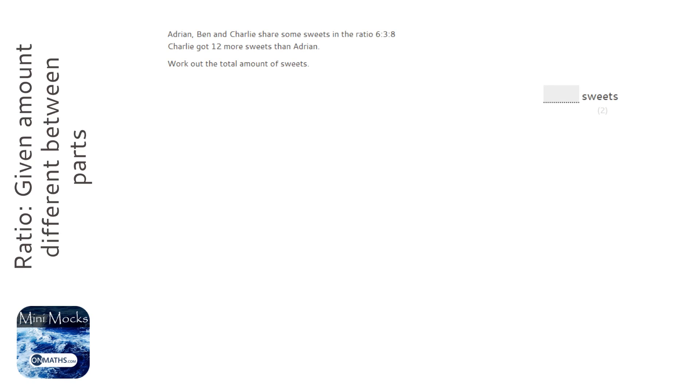OK, so this question is a little bit more complicated than it first seems. So we've got Adrian, Ben and Charlie, and they share some sweets in the ratio of 6 to 3 to 8. And it says that Charlie got 12 more sweets than Adrian.